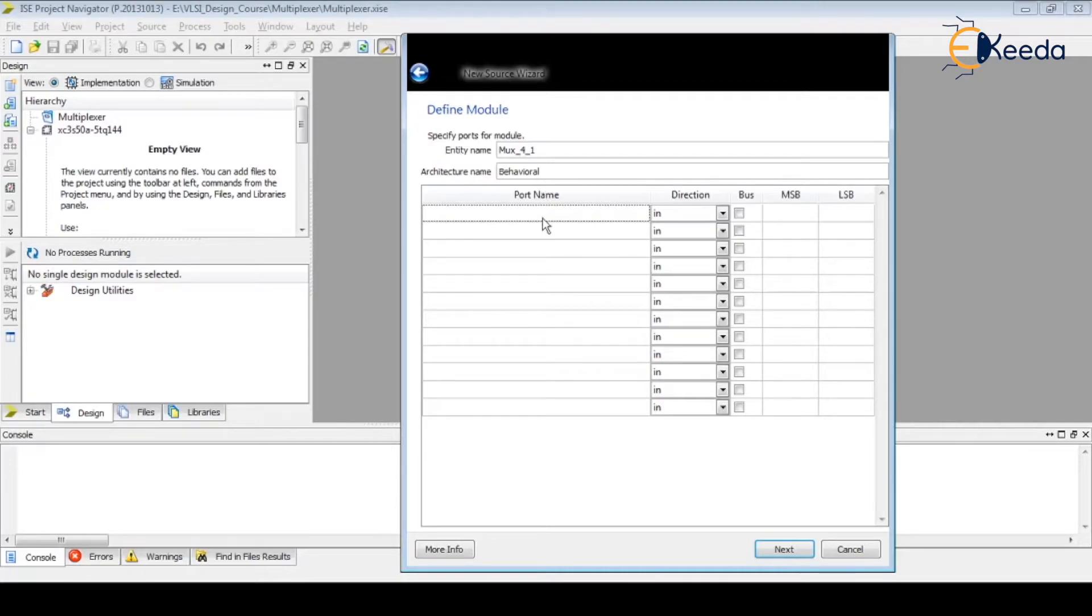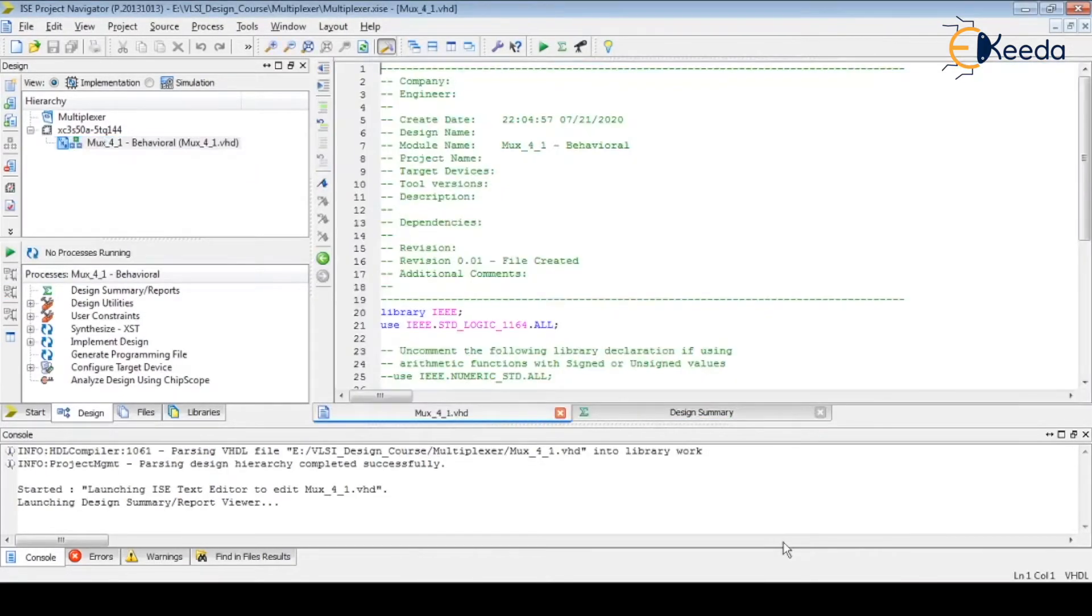Then let's add the source file, New VHDL module. File name MUX, we are creating four-to-one. So how many inputs we have? We have total four inputs, two select lines, and one output. So let us select i0, i1, i2, i3, so total four inputs. All are of type in, single bit. Then we are giving a select line. I am giving directly a signal select line with a bus width 1 down to 0, so 2-bit bus I am declaring. And here one output y. Then next, finish.